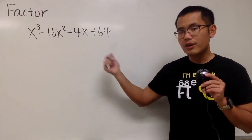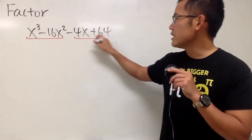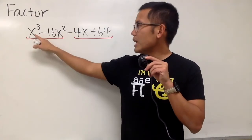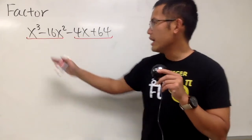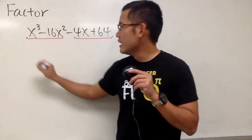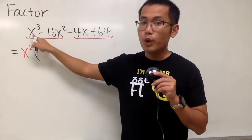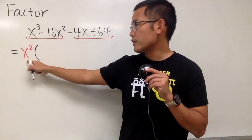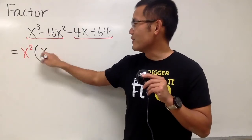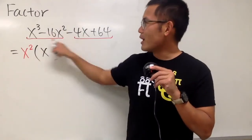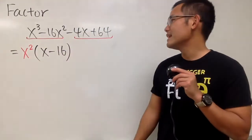We are going to factor this right here — it has 4 terms, so we should try it by grouping. Let's look at the first 2 terms and then the last 2 terms. We have x cubed and x squared, so we can factor out x squared. x to the third minus x squared: 3 minus 2 is 1, so we have x to the first left. And the minus 16 remains after taking out x squared.